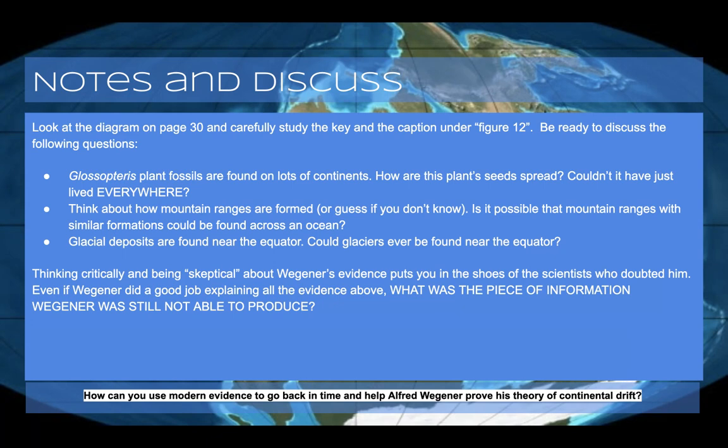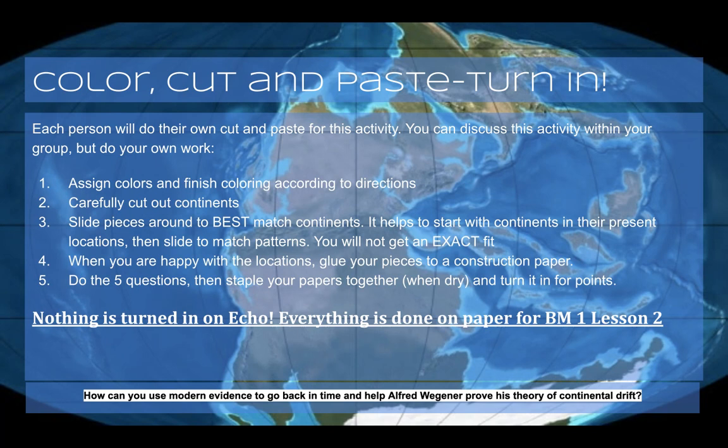So we have some continents that are now at the equator that used to be in climates that supported glaciers. Wegener had great evidence, but remember — people didn't believe him because he didn't know what could possibly be moving the continents.